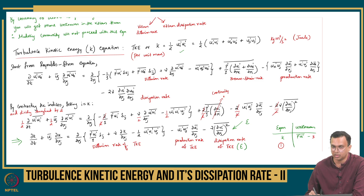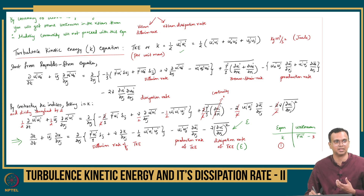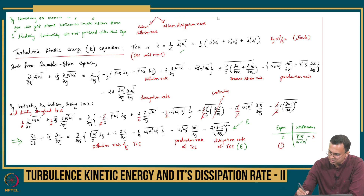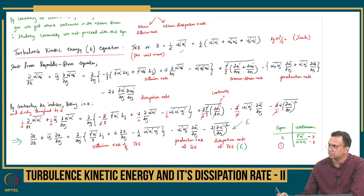Now ui prime ui prime is a sum, so it loses the directional dependency. The order of this tensor — how many unknowns are there? 3 unknowns — it has become a vector. ui prime ui prime is summed up, so it becomes a scalar, and only uj prime is the vector. So you have ui prime ui prime uj prime — this is 3 unknowns for j equal to 1, 2, 3.